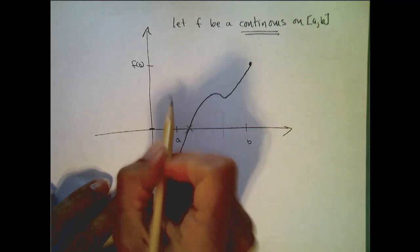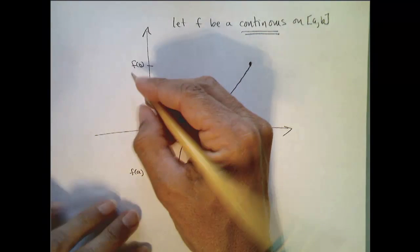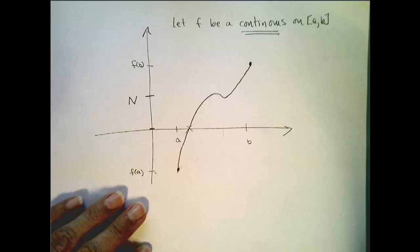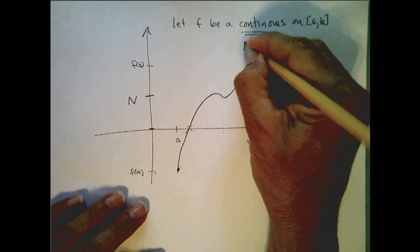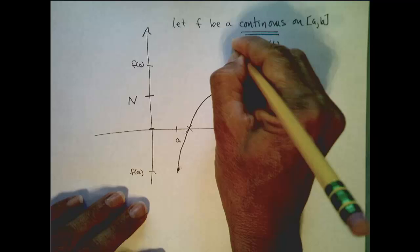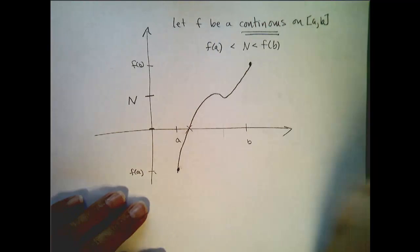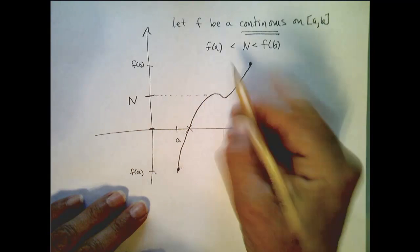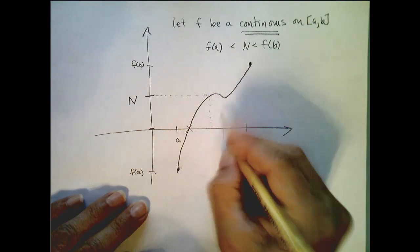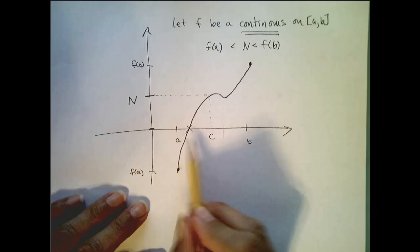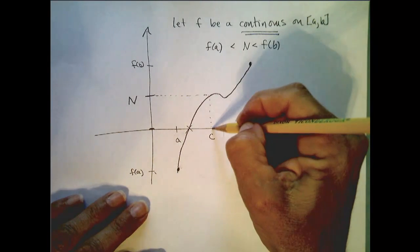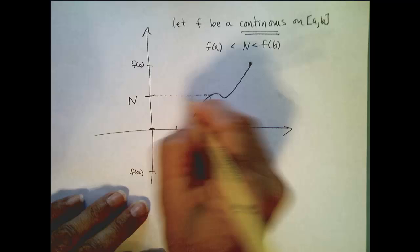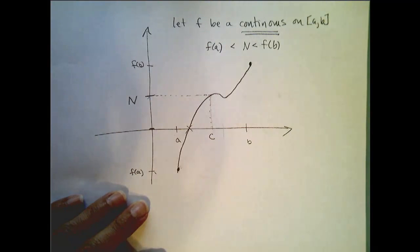If I pick any number between f of a and f of b, let's call it n. So n is going to be less than f of b, bigger than f of a. My claim is that there has to be a c value between a and b, such that f of c gets mapped to n.